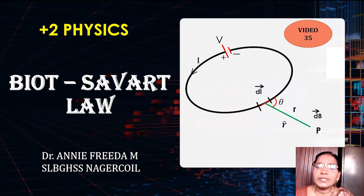If this is the current carrying conductor, magnetic field will be produced around this conductor and so they wanted to find the value of the magnetic field at a point P which is at a distance of R from the current carrying conductor.